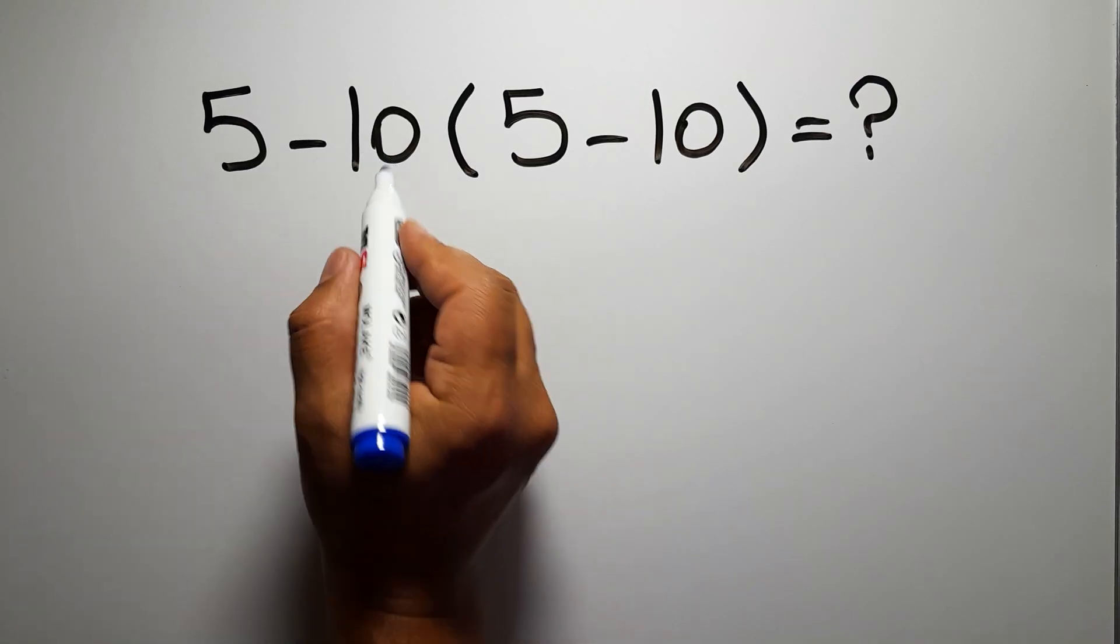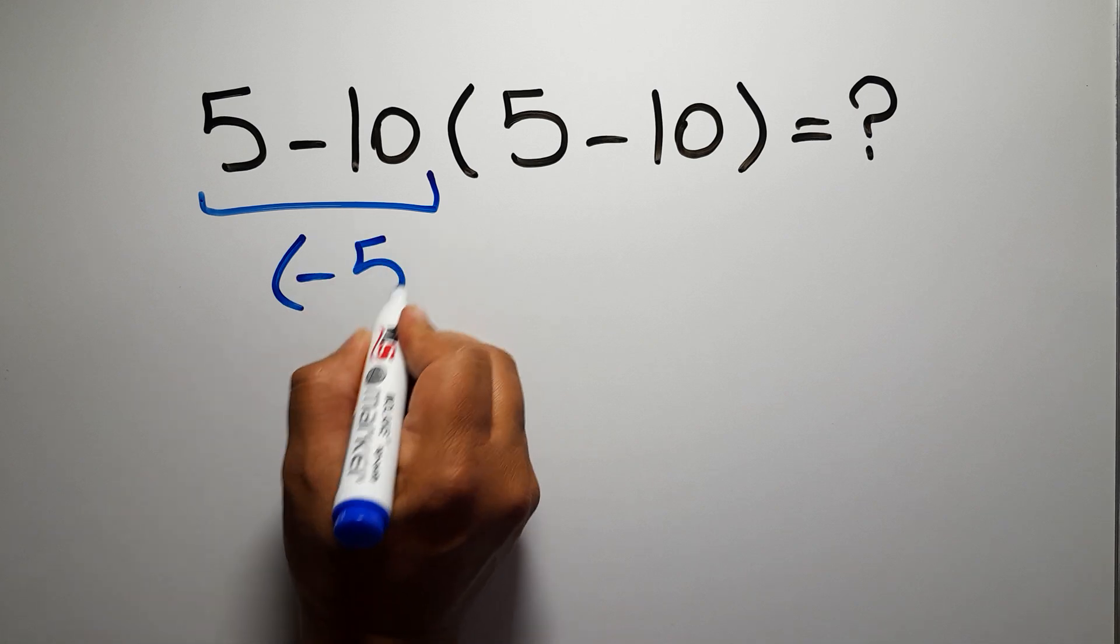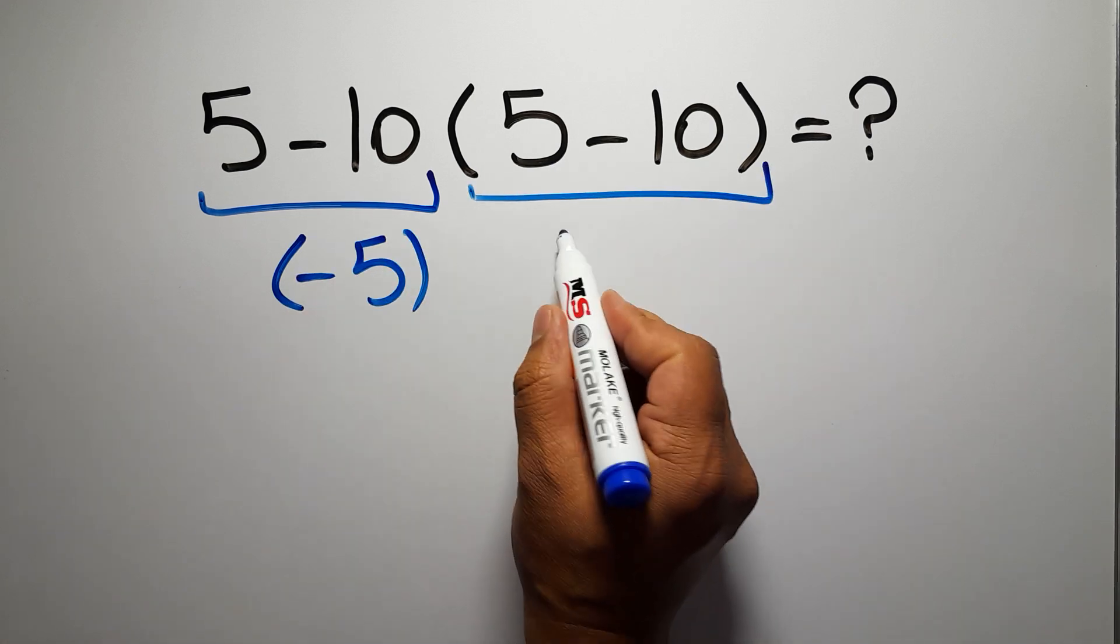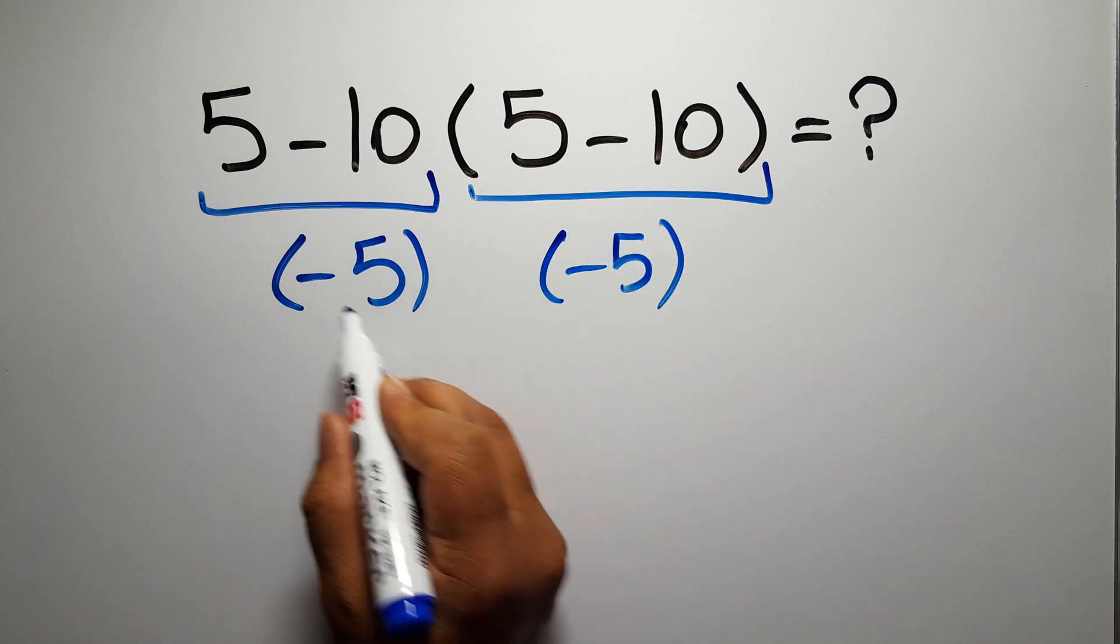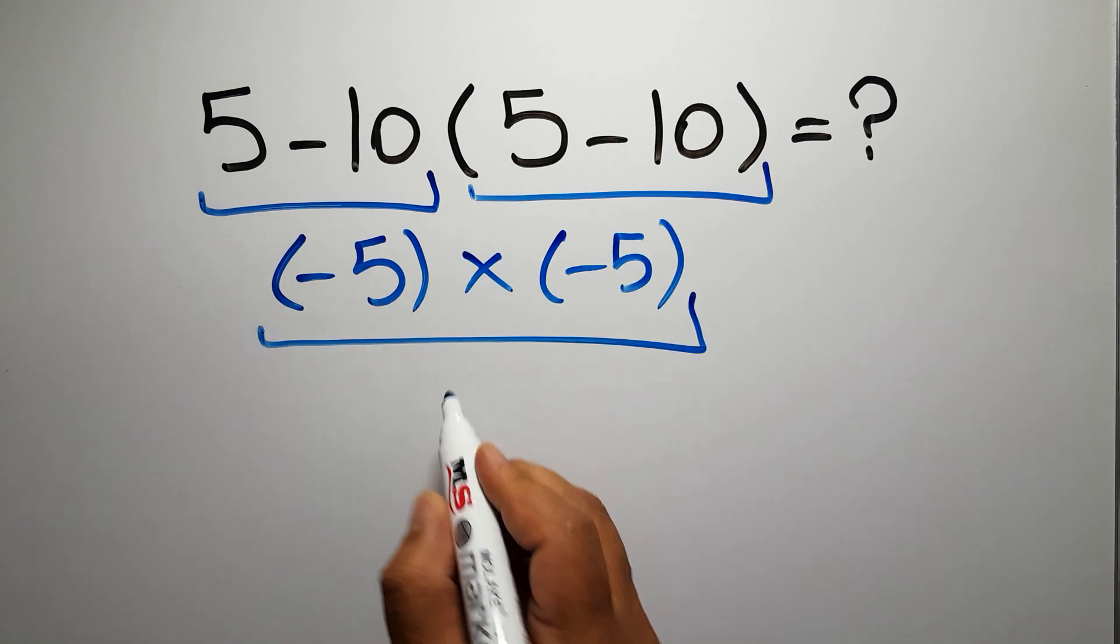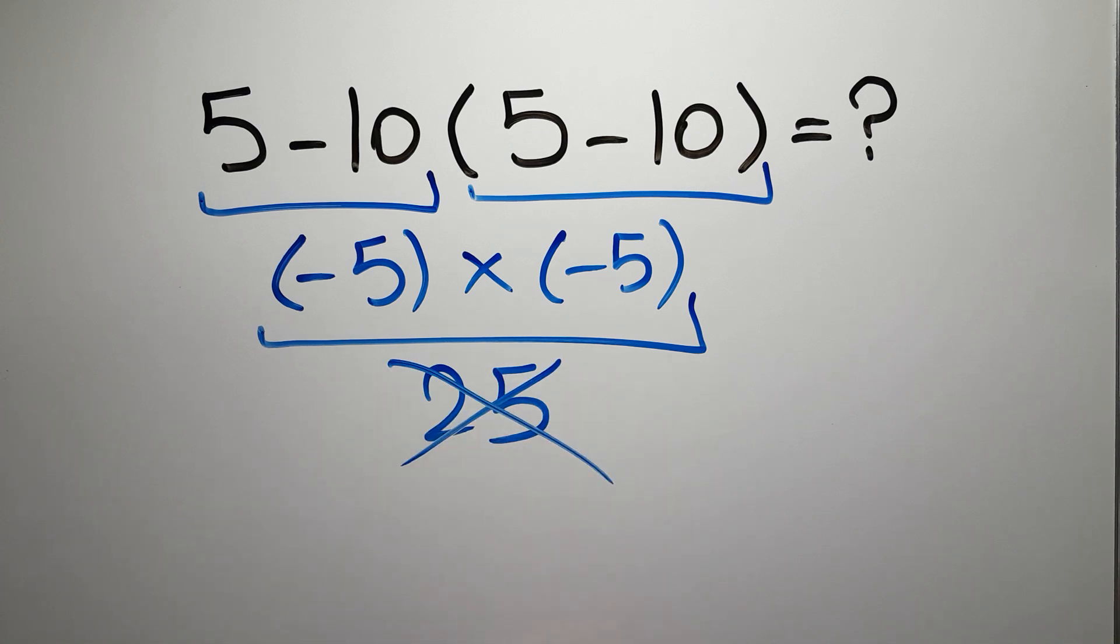Here we have 5 minus 10, which gives us negative 5, and again here we have 5 minus 10. So negative 5 times negative 5 gives us 25, but this answer is not correct because according to the order of operations...